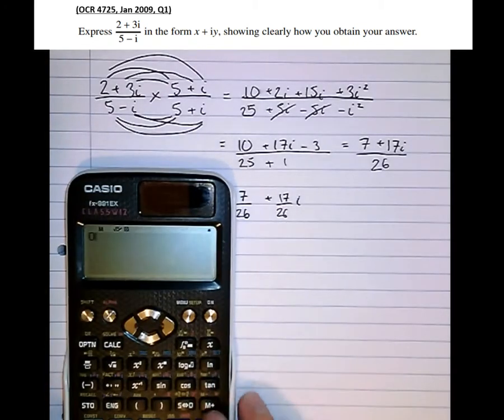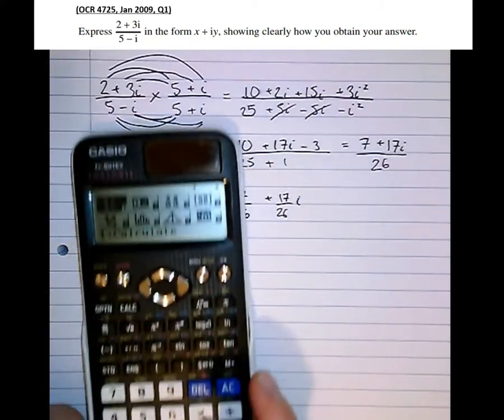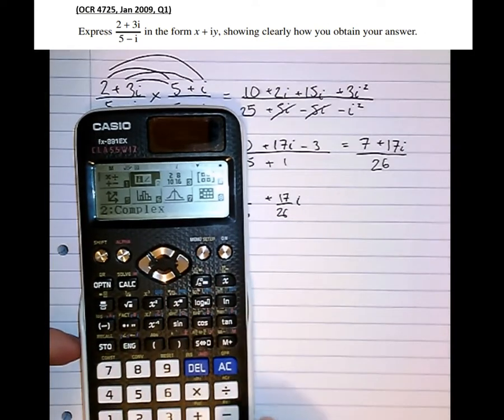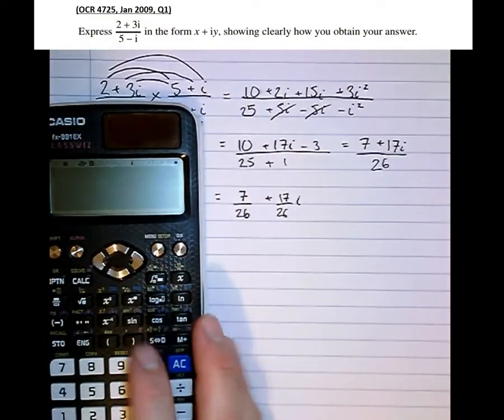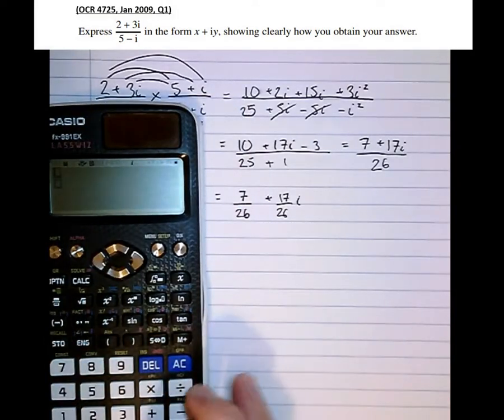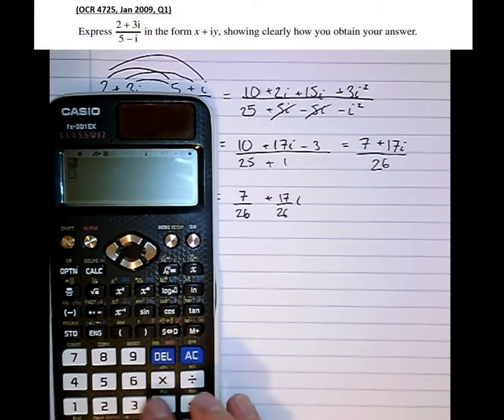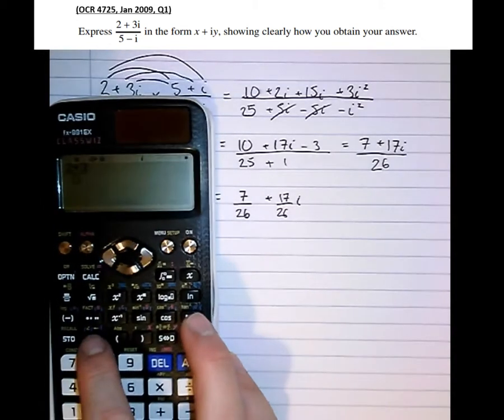And on the calculator, we can check this answer by putting it into complex numbers mode. So putting it into complex numbers mode, there we go. So if we type in the original question, 2 plus 3, and the i button is just there,